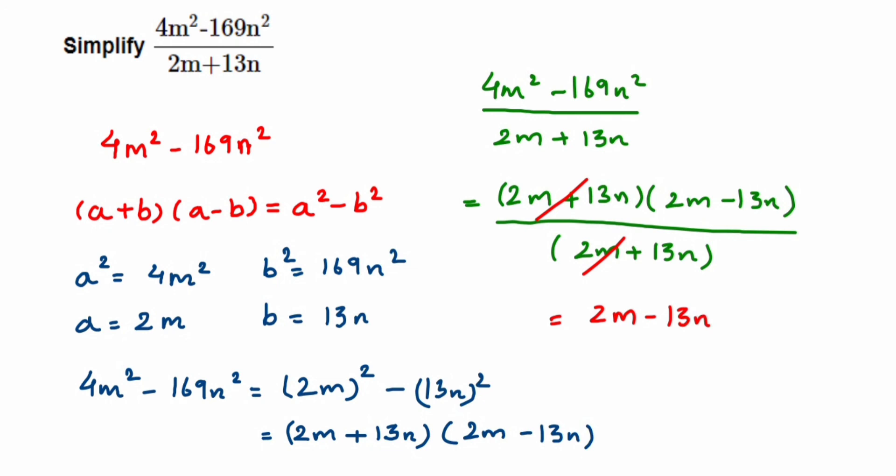We solved this using the identity by finding a and b values and substituting them. I hope it's clear. In case you have any further questions or doubts, you can drop a comment below. Thank you so much for watching.